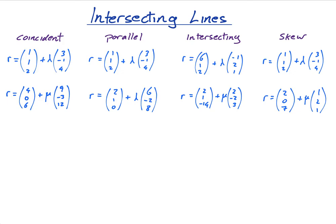In this lesson we're going to look at four different types of pairs of lines, and then I'm going to show you how we find the intersecting points of two lines that intersect. We're going to use this example. So firstly, let's look at what these four words mean.